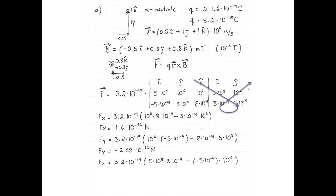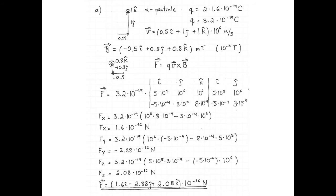Finally, the mnemonic for the Z direction is shown in purple. Starting at k-hat and going diagonally downward, we take 5 times 10 to the 5 meters per second times the Y component of the magnetic field, 3 times 10 to the negative 4 Tesla, subtract the X component of the magnetic field, negative 5 times 10 to the negative 4 Tesla, times the Y component of the velocity, 10 to the 6 meters per second, giving 2.08 times 10 to the negative 16 Newtons. The total force on the charged particle is 1.6 i-hat minus 2.88 j-hat plus 2.08 k-hat, times 10 to the negative 16 Newtons.